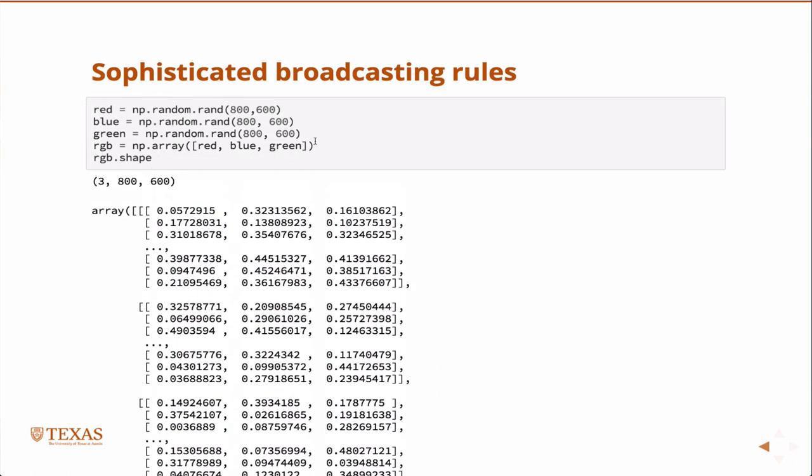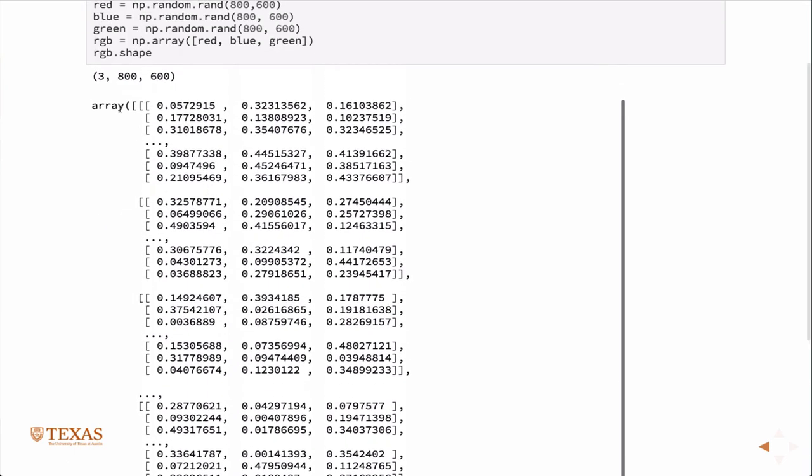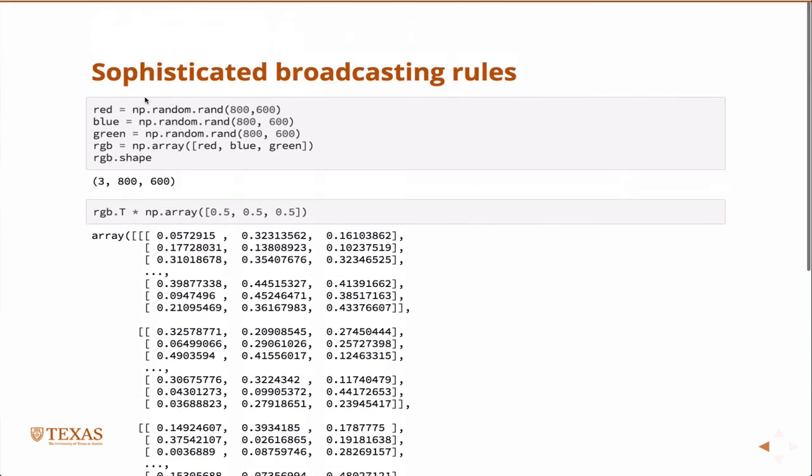The last thing is you can do kind of sophisticated broadcasting. So broadcasting is basically when you can multiply entire rows over an array in a certain way. And so here what I've done is I've created three random arrays, red, blue, and green, all of them that are 800 by 600. So this would be like, for example, images, pixel images. Then I can combine those arrays into a bigger array. And so the shape of that bigger array is three by 800 by 600. So then I can multiply that by essentially an array of one-half, one-half, one-half. So this is going to multiply across the first indice, three.